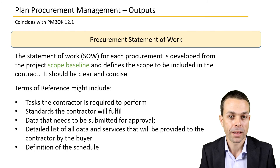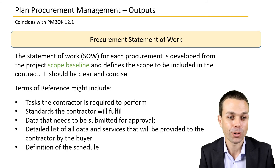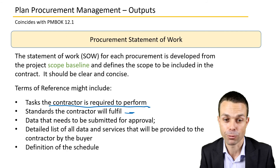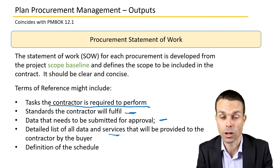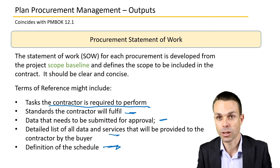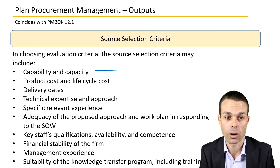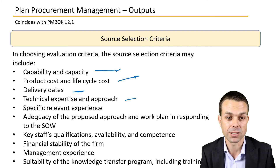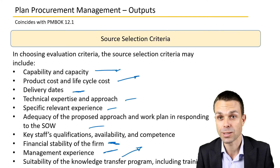The procurement statement of work is a key output developed from the project scope baseline, defining the scope to be included in the contract. Terms of reference in a procurement statement of work include the tasks the contractor is required to perform, the standards they will fulfill, data that needs to be submitted for approval, a detailed list of all data and services to be provided throughout or at the end of the contract, and a definition of the schedule they will work to. Source selection criteria — another key output — can include capability or capacity, product cost and life cycle cost, delivery dates, technical expertise, relevant experience, qualifications, financial stability of the firm, management experience, and suitability of knowledge transfer.